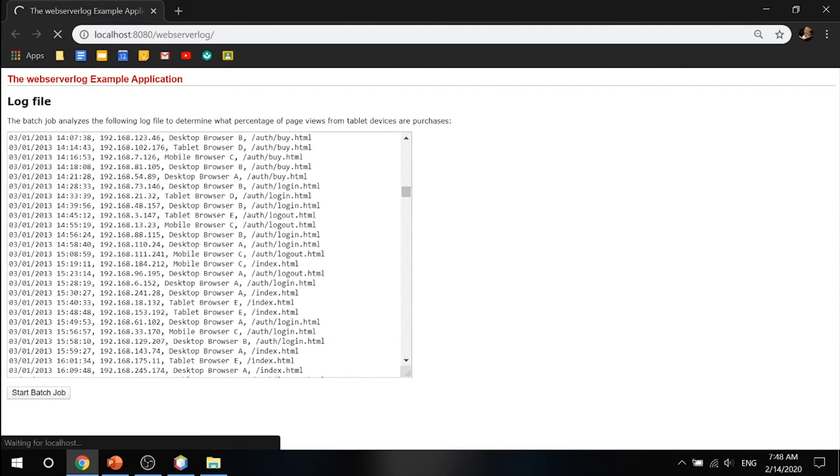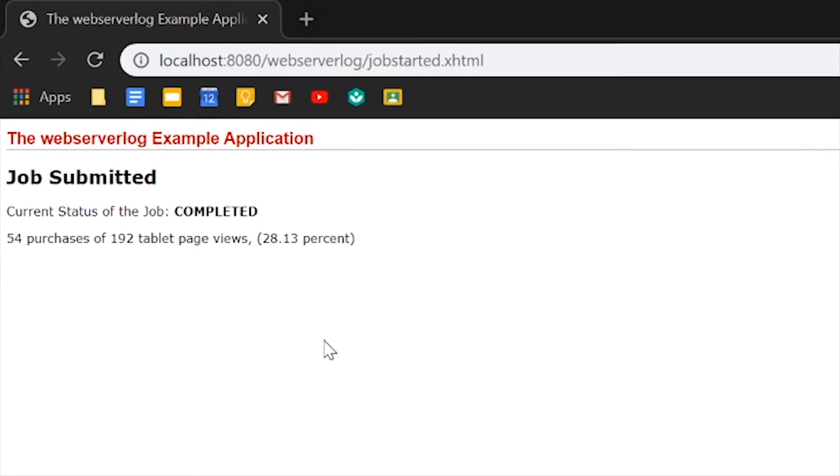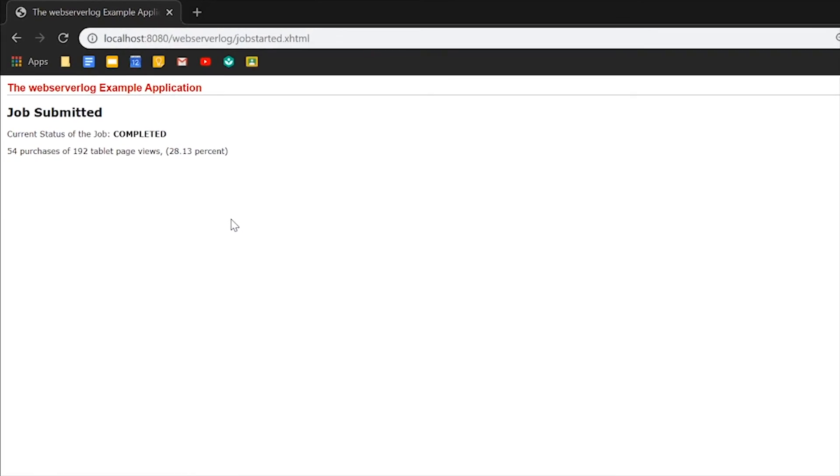Go ahead and start the batch job and it tells us that first of all it started. Go ahead and check the status and it says that 54 of the purchases of 192 tablet page views are purchases. So that means it's 28 percent. As you can see, it did it automatically on its own without me having to do essentially anything.